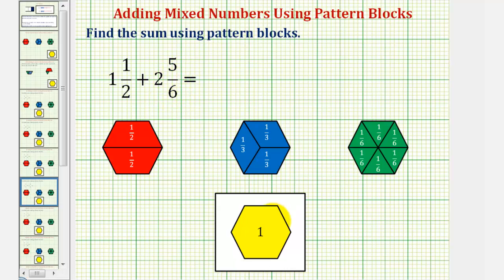For review, we define one yellow pattern block as one whole. Therefore, one red pattern block is equal to one-half, one blue pattern block is equal to one-third, and one green pattern block is equal to one-sixth.